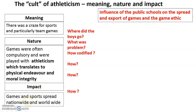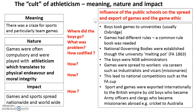What impact did the cult of athleticism have? These games and sports spread nationwide and worldwide. Public school boys who went to university took the games with them. This created a problem — boys from different public schools had different rules for different games. However, they were all literate, so they developed a common rule book. This happened through what's called the 'melting pot' — at university, boys from different schools with different rules combined them to produce the actual rules for a specific game.